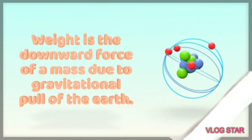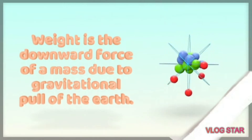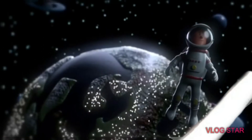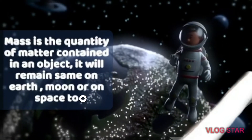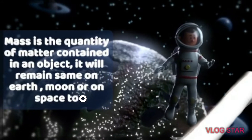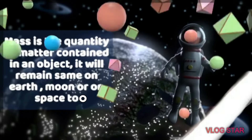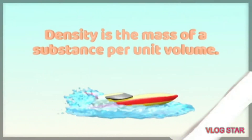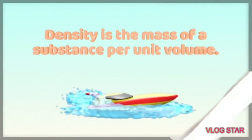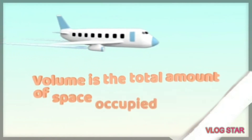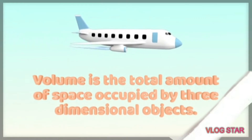Weight is the downward force of a mass due to the gravitational pull of the earth. Mass is the quantity of matter contained in an object — it remains the same on earth, moon, or in space. Density is the mass of a substance per unit volume. Volume is the total amount of space occupied by three-dimensional objects.